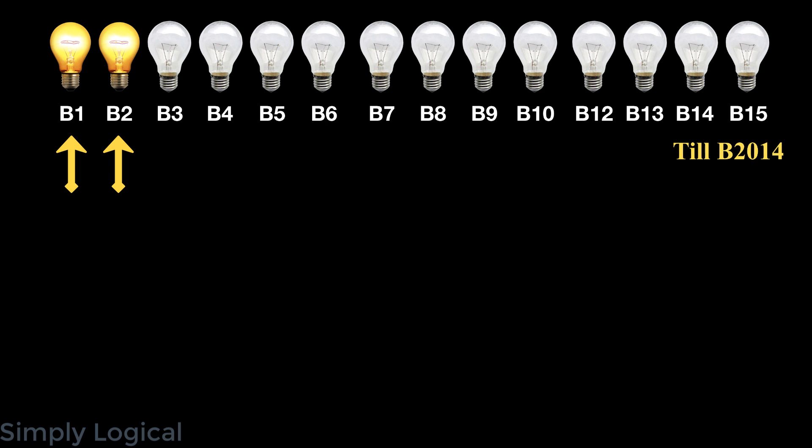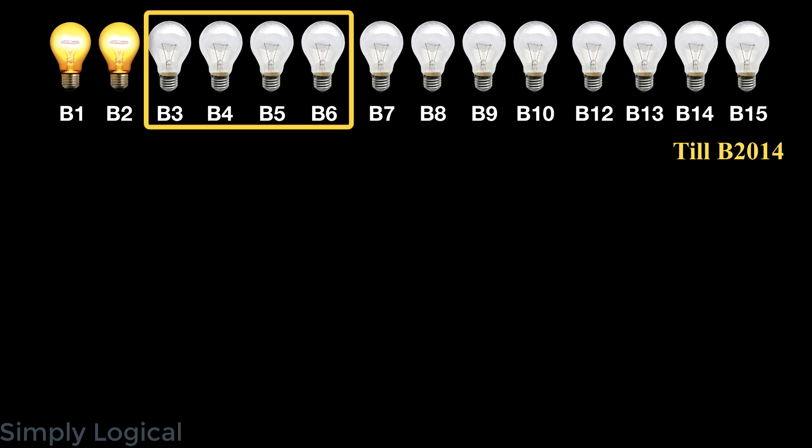Since the bulbs are placed in a circular path, and two bulbs are on while 2012 are off, clearly all 2012 off-state bulbs are adjacent. We will operate on these 2012 bulbs by creating groups of four off bulbs. We can choose any off bulb apart from the one next to an on bulb and turn the two bulbs adjacent to it on, then choose the third bulb just turned on to make two more bulbs on — giving us four adjacent bulbs in the on state.